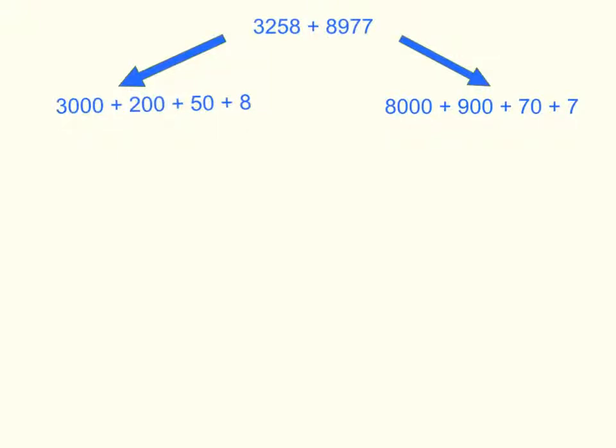To answer the question, what is 3,258 plus 8,977? First, I wrote both numbers in expanded form.